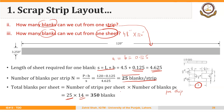Recall that using the wide run layout we were able to cut 380 blanks per sheet. That seems to be a better option, because with the narrow run layout we are only able to cut 350 blanks per sheet, whereas in wide run layout we were able to cut 380 blanks per sheet.